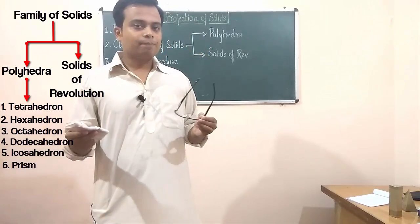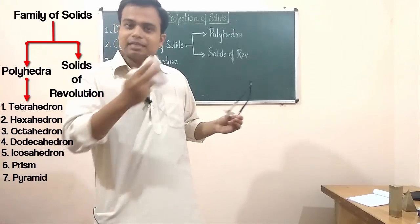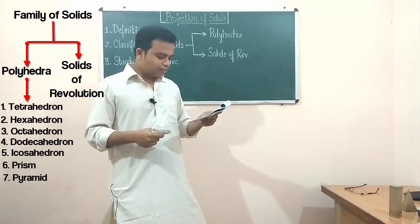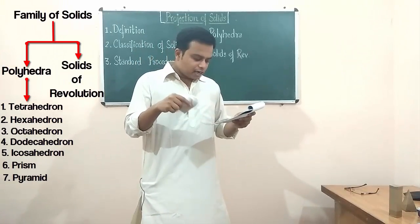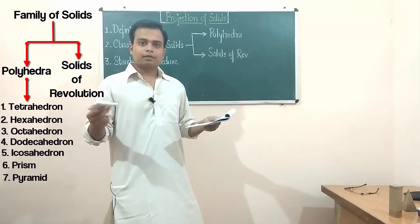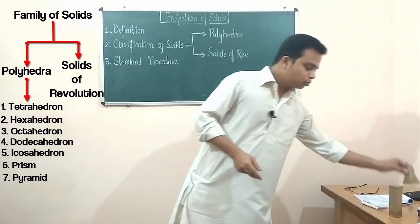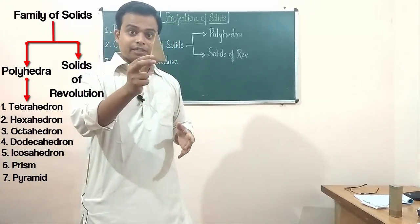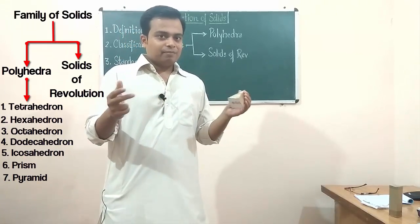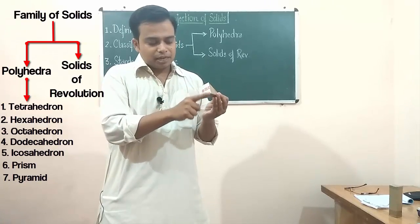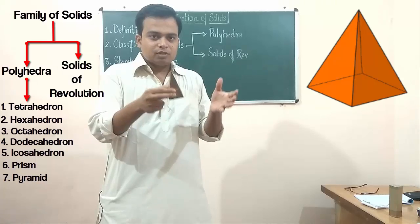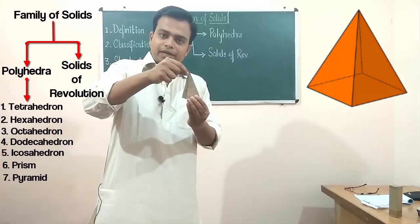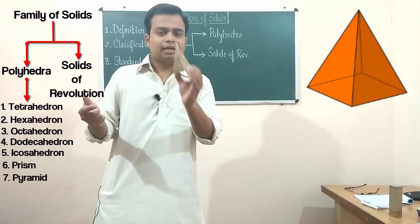The seventh polyhedron is the pyramid. A pyramid is a polyhedron having a plane figure as its base and a number of triangular faces meeting at a point called the vertex or apex. For example, this here is a square pyramid — you can find them in Egypt — with a square base and triangular faces meeting at the top vertex.